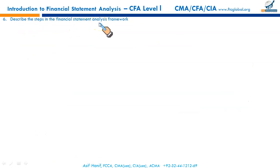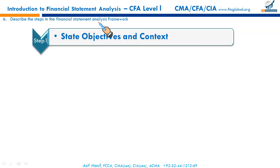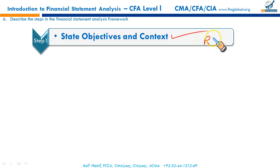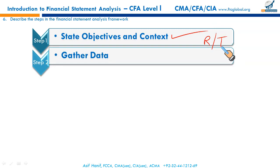The last LOS describes the steps in the financial statement analysis framework. The first step is to state objectives and context — why do we want to conduct a financial statement analysis, what questions do we seek answers to, what information is essential and required, and what resources — monetary and time-based — are available. The second step is to gather data: financial statements, the EDGAR system, financial press, industry averages, the overall economic situation, company site visits, and discussions with the company's lawyers, customers, and suppliers.